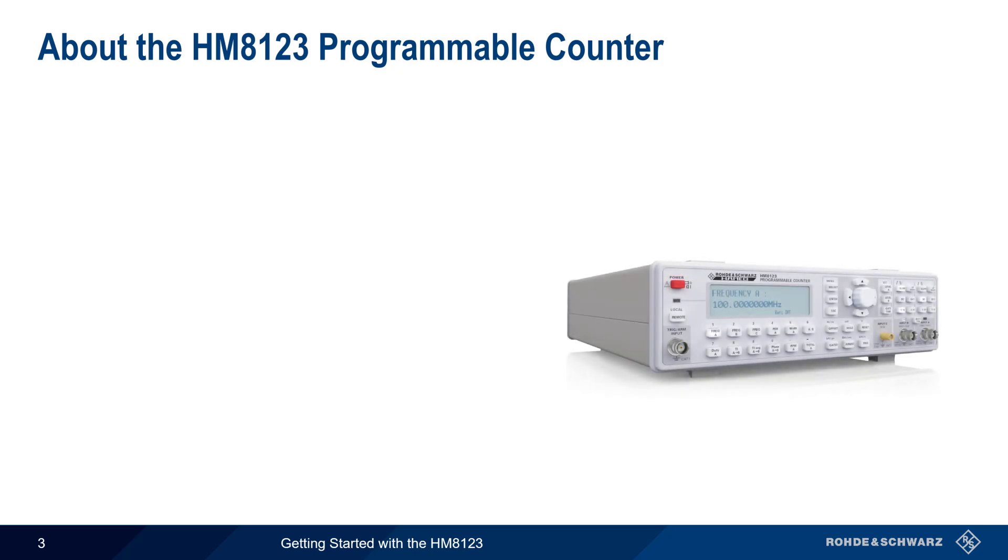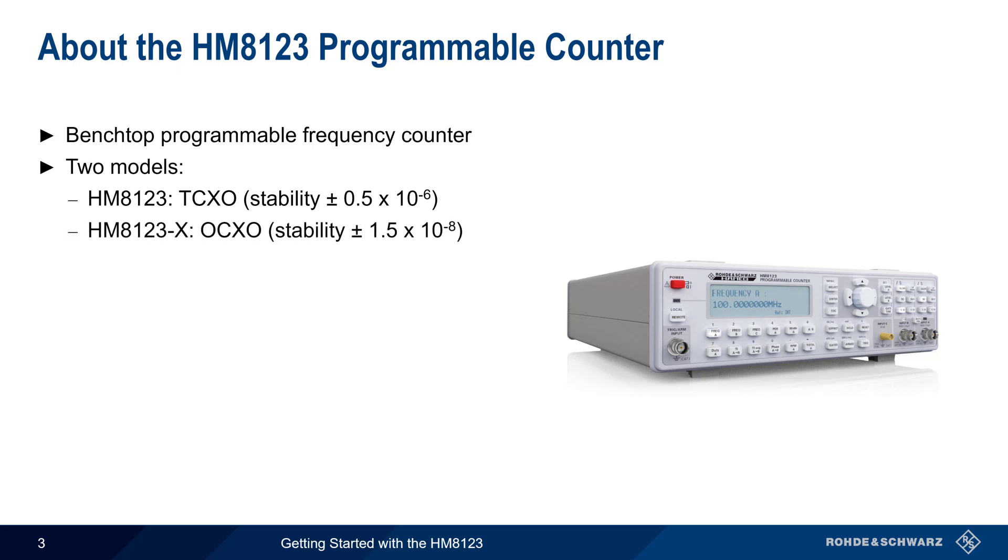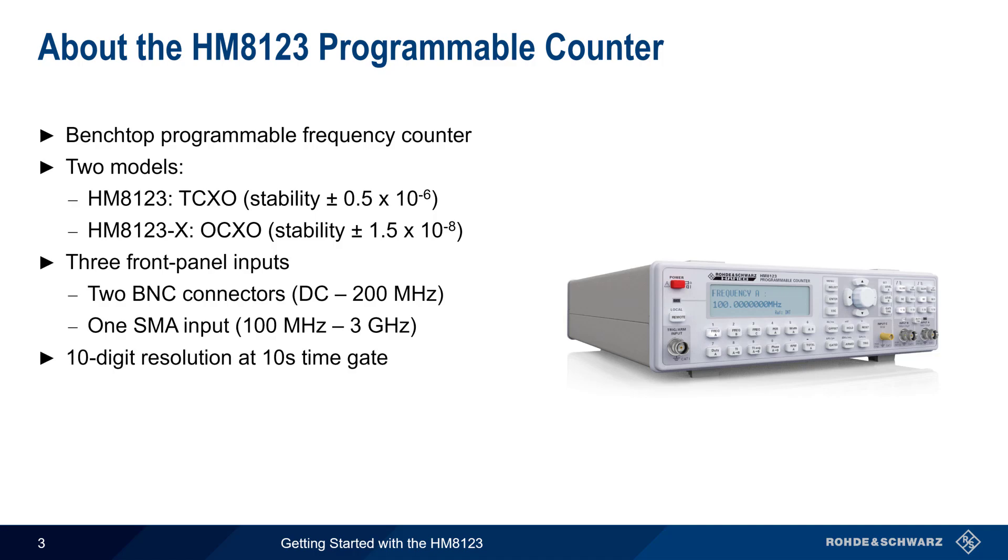The Rohde & Schwarz HM8123 is a benchtop programmable frequency counter that's available in two models. The standard HM8123 has a temperature-controlled oscillator, and the HM8123X has an oven-controlled oscillator for greater stability. Both models have three front panel inputs, two BNC connectors that can measure signals from DC to 200 MHz, and a single SMA input that covers the range of 100 MHz to 3 GHz. The HM8123 can provide up to 10 digits of resolution when the gate time is set to 10 seconds or longer.